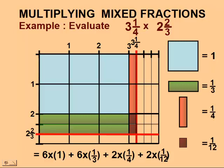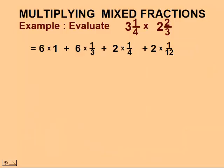Now, we'll add up all these rectangles and squares to determine our area. We have 6 ones, 6 one-thirds, 2 quarters, and 2 one-twelfths. We'll multiply first, following order of operations. 6 times 1 is 6. 6 times one-third gives us 6 thirds. 2 times one-quarter gives us 2 quarters. And 2 times one-twelfth gives us 2 twelfths.